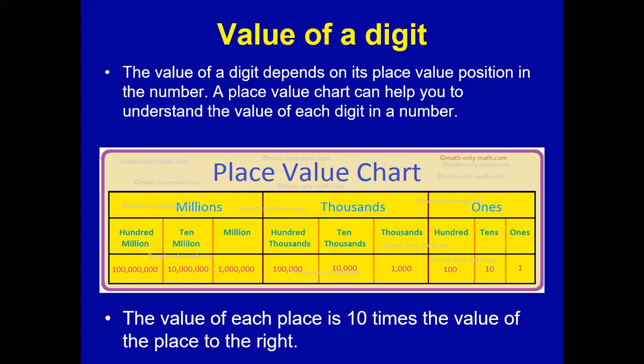Remember: the value of each place is 10 times the value of the place to its right. For example, 10 is 10 times 1; 100 is 10 times 10; 1000 is 10 times 100 — and so on. So remember: the value of each place is 10 times the value of the place to the right.